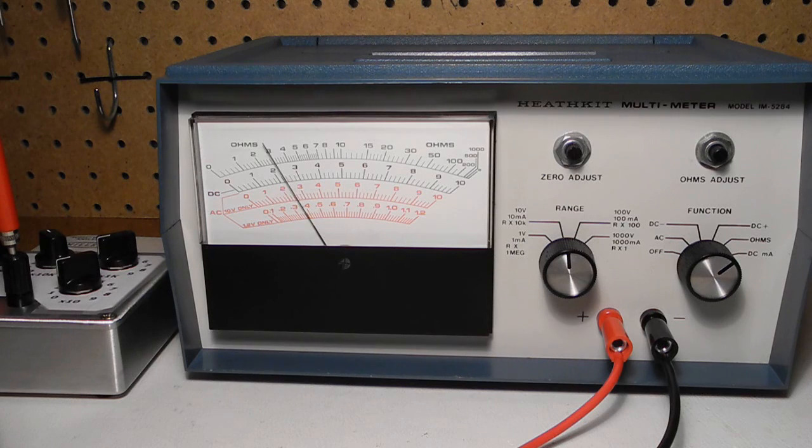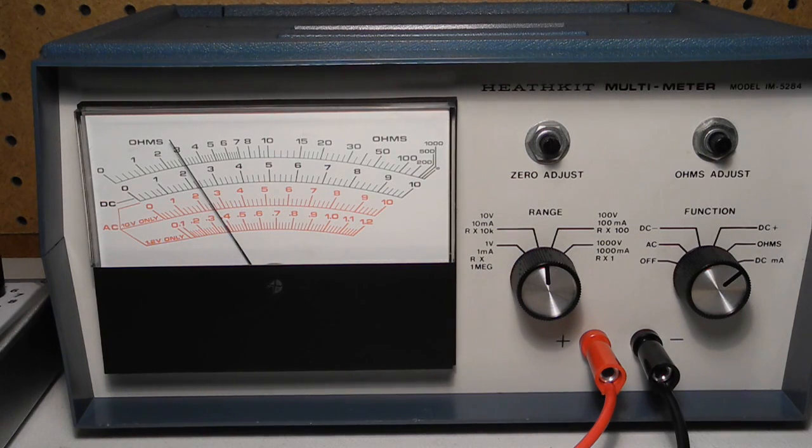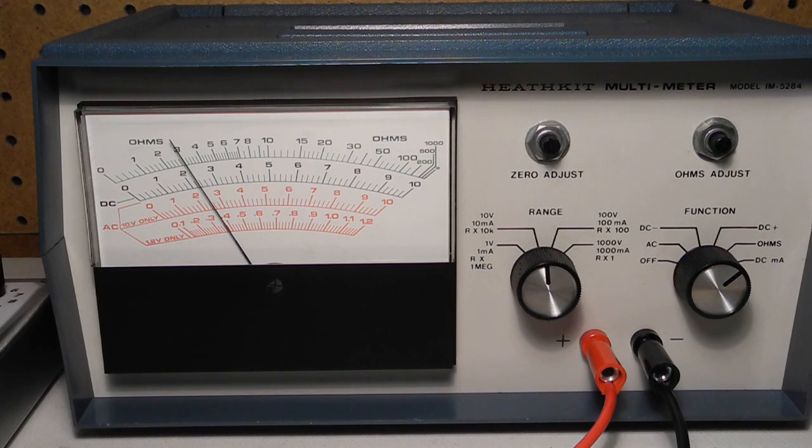For the best accuracy, you want to select a range that will bring the reading to the lower end of the scale. Note that the voltage and current ranges are multiples of 10, so there's not much overlap between them. So for example, to measure 12 volts, you would have to use the 100 volt scale. The accuracy is plus or minus 3% of full scale, which means it's accurate to plus or minus 3 volts on this range.